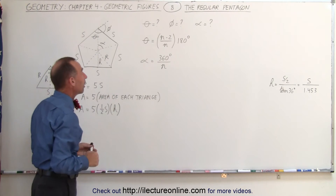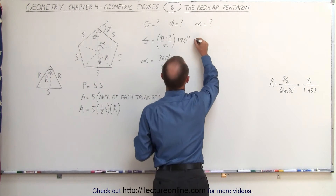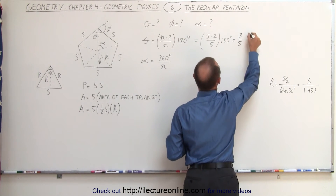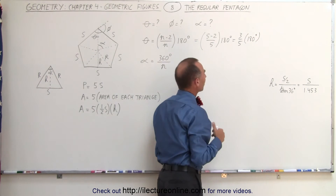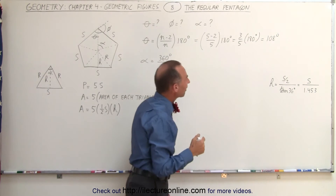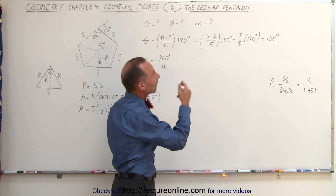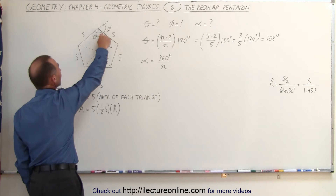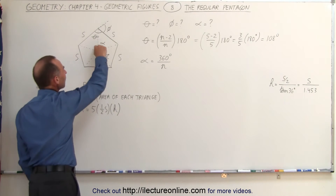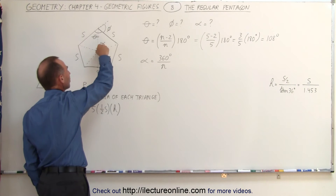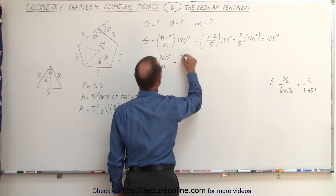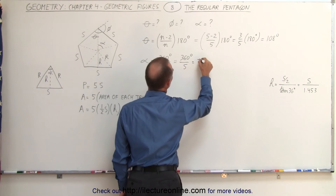The same equation works for any regular polygon. For a pentagon with five sides, this becomes (5 − 2) ÷ 5 × 180°, which is three-fifths of 180°. That equals 108°, since 180 ÷ 5 = 36, and 36 × 3 = 108. So the interior angle theta is 108°. Now, the angle at the tip of each of the five triangles: going around the full circle is 360°, and with five triangles, alpha = 360° ÷ 5 = 72°.